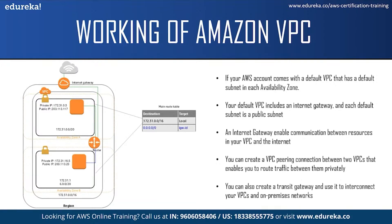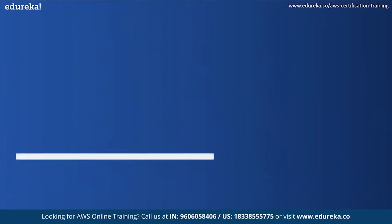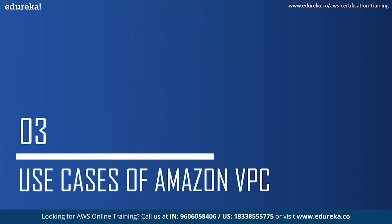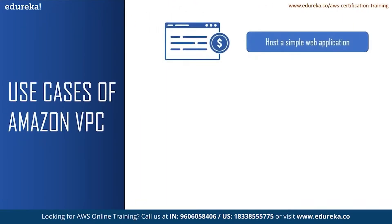The transit gateway acts as a regional virtual router for traffic flowing between its attachments, which could include VPCs, VPN connections, AWS Direct Connect gateways, and transit gateway peering connections. With Amazon VPC you can host a simple web application such as a blog or a simple website with an additional layer of privacy and security. You can secure the website by creating security group rules which allow the web servers to respond to inbound requests from the internet.